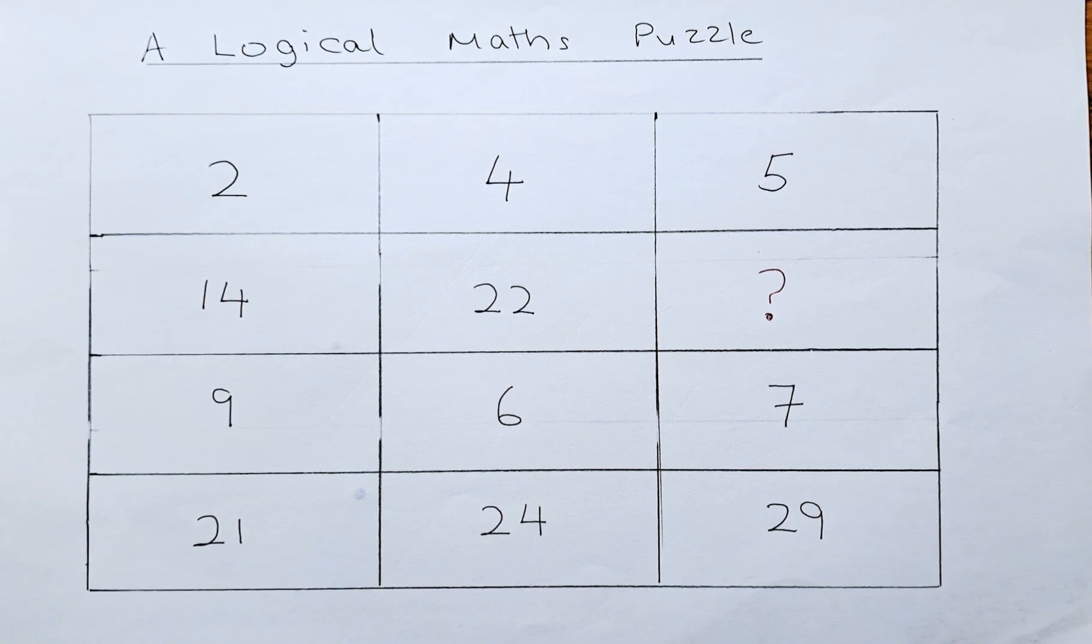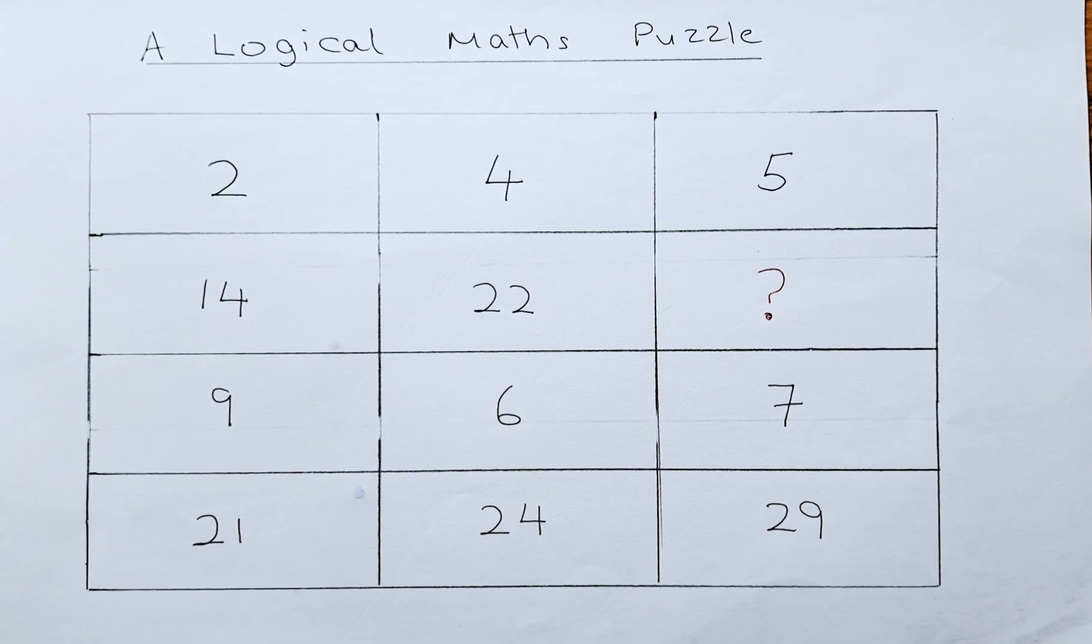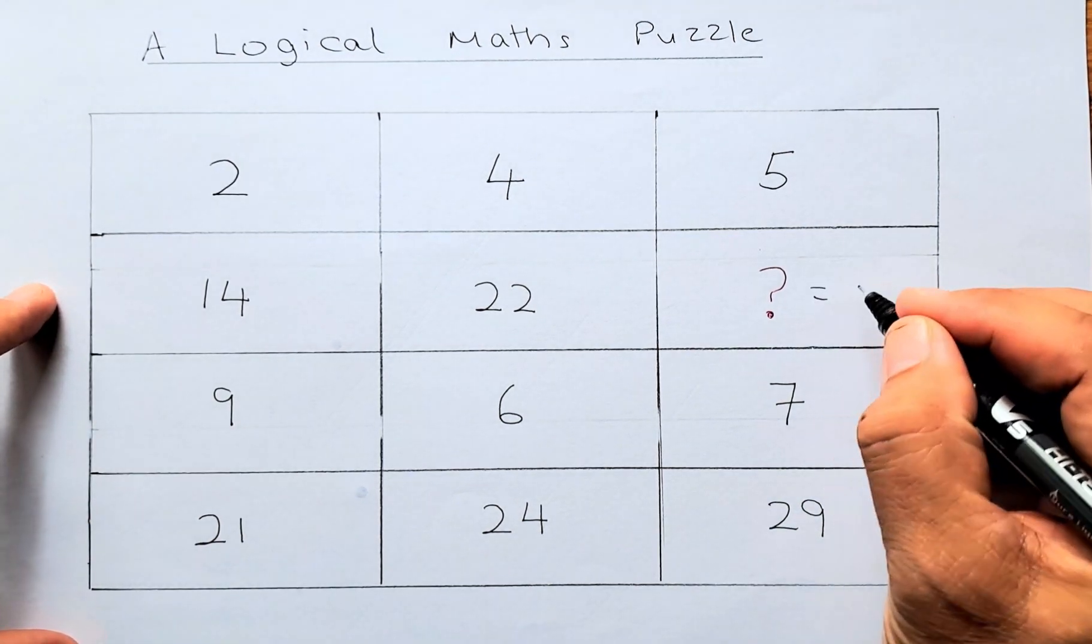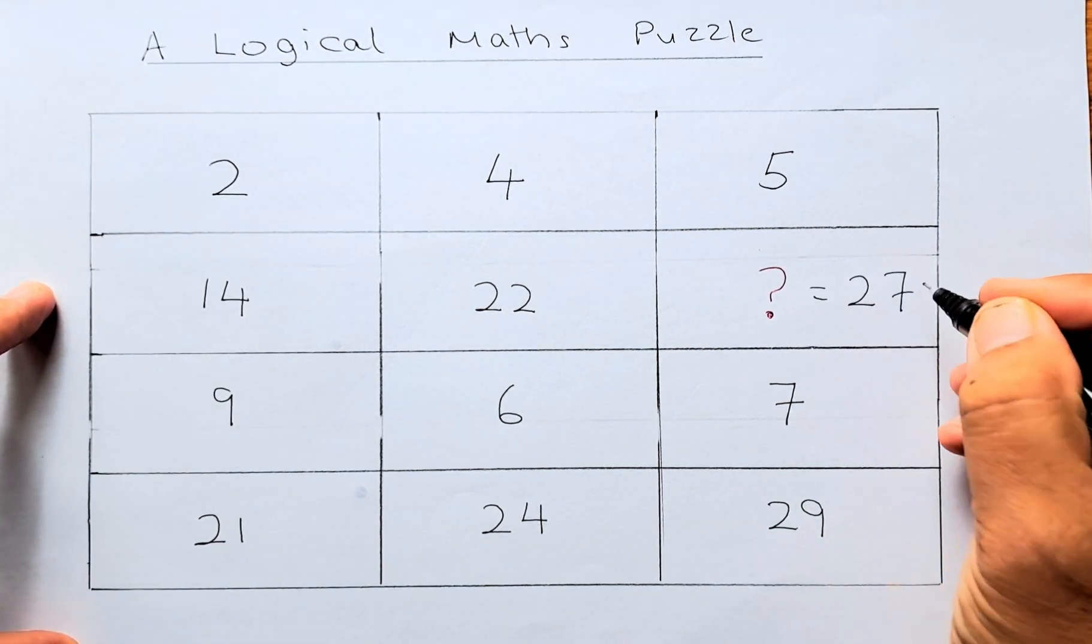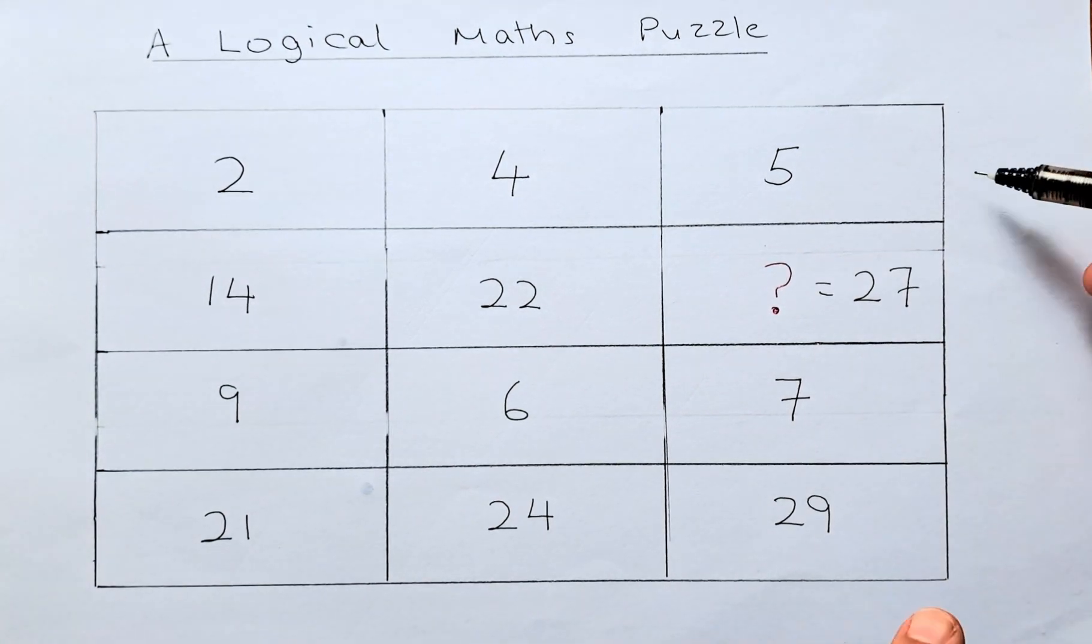So in our last column, we have 5 and 29. They'll add up to 34. So 7 must add with another question mark number to give you 34. And that number has to be 27, because 27 plus 7 is 34 is equal to 5 plus 29, which is also 34.